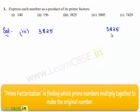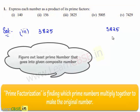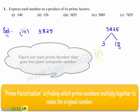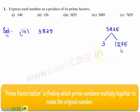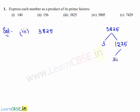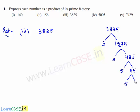The least number that goes into 3825 is 3, therefore this can be written as 3 times 1275. 1275 can be written as 3 times 425, and 425 can be written as 5 times 85, and 85 can be written as 5 times 17.